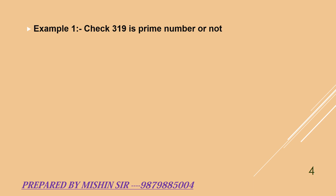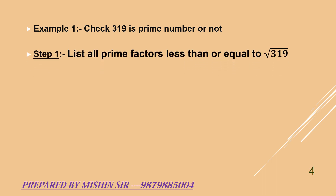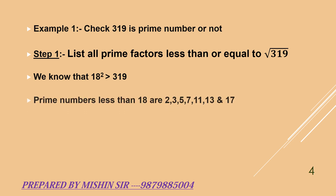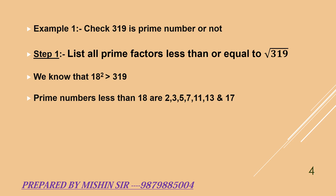Example 1: check whether 319 is a prime number or not. Step 1: list all prime factors less than or equal to the square root of 319. We know that 18 squared, which is 324, is greater than 319. So the prime numbers less than 18 are 2, 3, 5, 7, 11, 13, and 17.